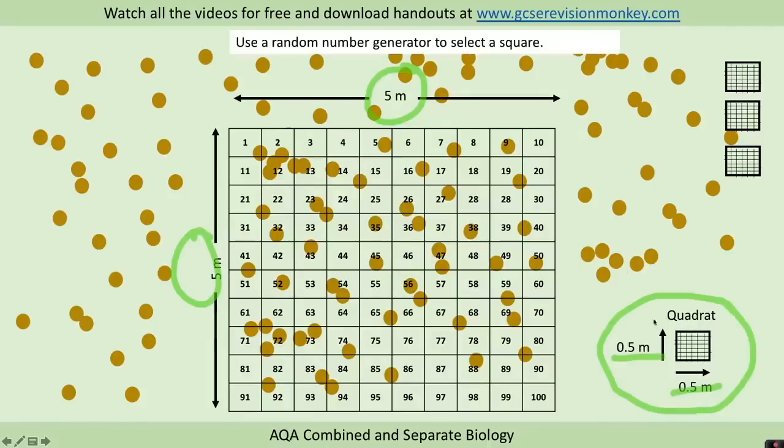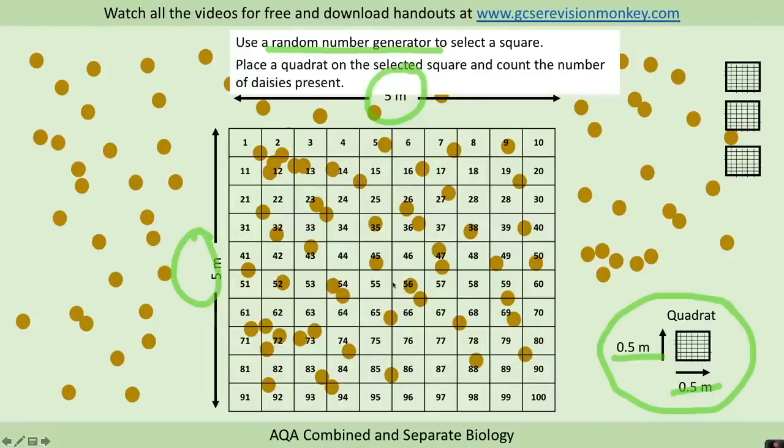We need to choose where to place our quadrat within this grid, but it would take too long to do all 100 squares. So what we use is a random number generator to select a square - you can get those on calculators or phones. We place a quadrat on that selected square and count the number of daisies present.